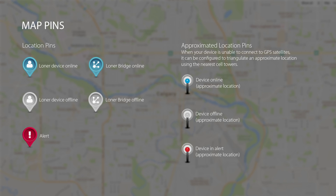Approximated location pins appear when your device is unable to connect to GPS satellites. Your device can be configured to triangulate an approximate location using the nearest cell towers. Blue approximated location pins are the approximate location of an online device. Gray approximated location pins are the approximate location of an offline device.